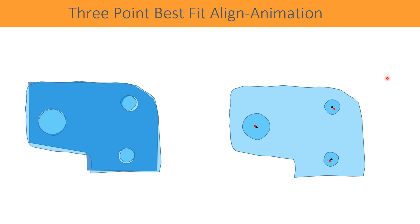This image shows how the center points are varied and optimized after the three-point best fit alignment is performed. In this way, performing the alignment can give us very reliable readings instead of relying on the small, insufficient length sizes of the geometries.